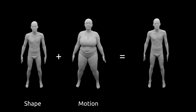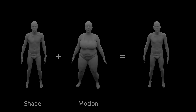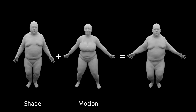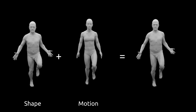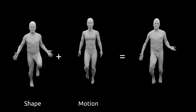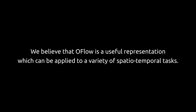Finally, we show motion transfers. We take a start shape, extract the motion from another sequence, and apply this motion to this shape. We believe that OFlow is a useful representation for various tasks.